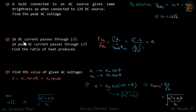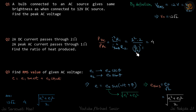This question: DC current is passed through 2 ohms and the same amount of AC peak current is passed through 1 ohm. Find the ratio of heat produced. Heat is proportional to power, and power is I²R for DC and Irms²·R for AC. Since the peak current is given for AC, the Irms value will be peak divided by root 2. Substituting these values gives you the ratio.